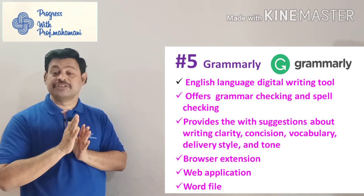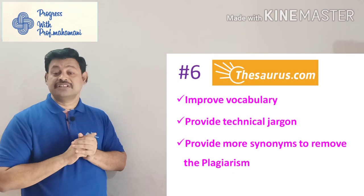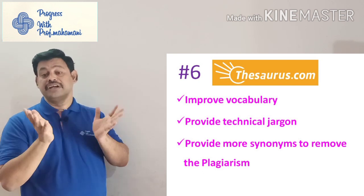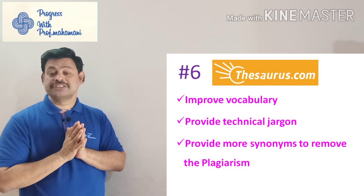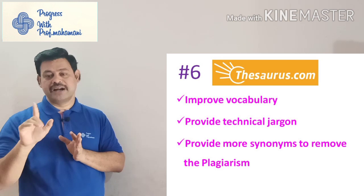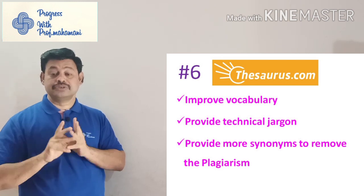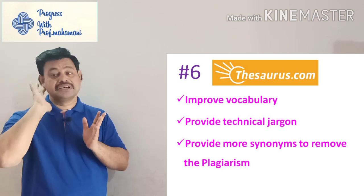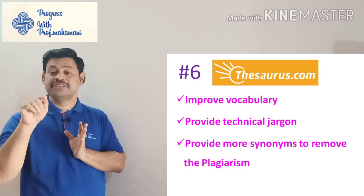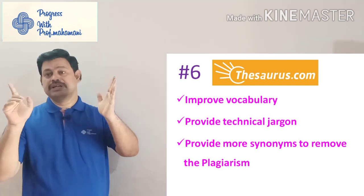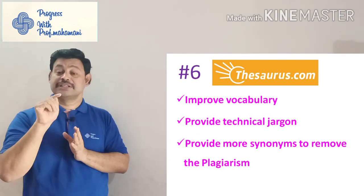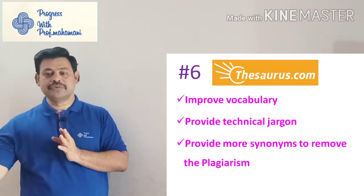The sixth one is Thesaurus.com. This software helps improve vocabulary, provides technical jargon, and gives more synonyms to help reduce plagiarism. One way to reduce plagiarism is by substituting synonyms, which preserves meaning better than full rewriting. Thesaurus.com will give 10 to 15 synonyms for a particular word. From those 15 synonyms, you pick the one most suitable for your sentence. This is an easy way to reduce plagiarism.